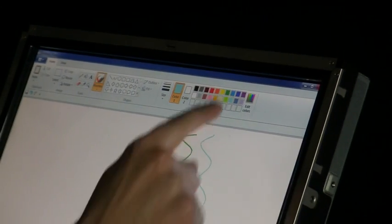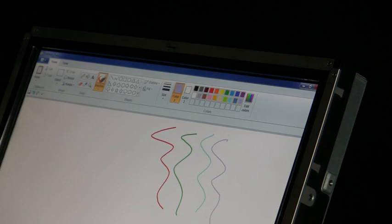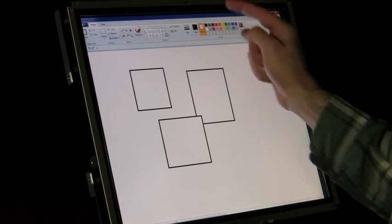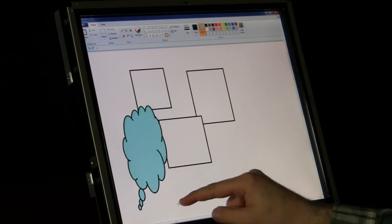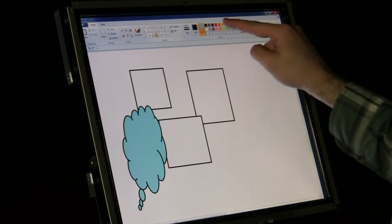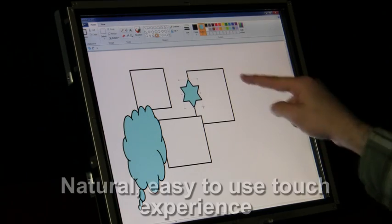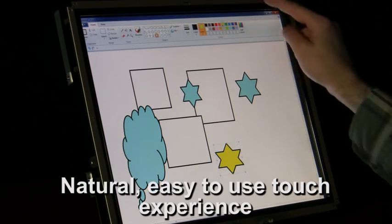Touch objects are sensed as they cross an optical plane on the screen. This means there is no dependence on the touch material, whether bare or gloved fingers, or how hard the screen is pressed. The result is a natural, easy to use touch experience, regardless of the application.